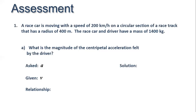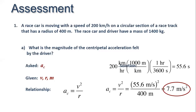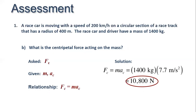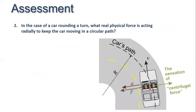Here is a question: given the speed of the car, radius of the track, and mass of the car with driver, what is the magnitude of the centripetal acceleration felt by the driver? Using ac = v²/r with the given values, we get ac = 7.7 m/s². For part b, the centripetal force Fc = mac gives Fc = 10,800 N.